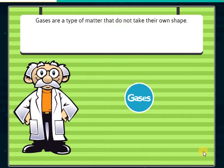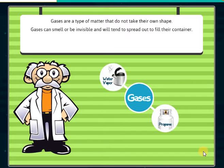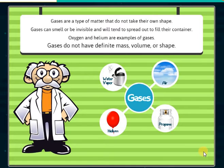Gases are a type of matter that do not take their own shape. Gases can smell or be invisible and will tend to spread out to fill their container. Oxygen and helium are examples of gases. Gases do not have definite mass, volume, or shape.